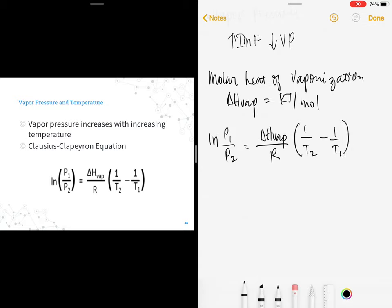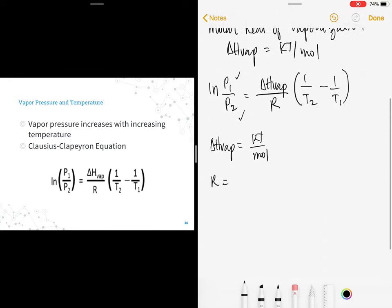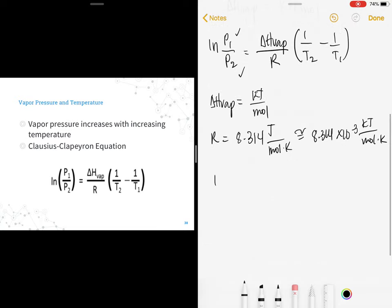What are the important points to remember here? Whatever unit P1 is, that should also be the unit of P2. The molar heat of vaporization unit is kilojoule per mole. R, your gas constant, is 8.314 joule per mole Kelvin. But if we're using kilojoule values, this is 8.314 times 10 raised to negative 3 kilojoule per mole Kelvin. Of course, the temperature should always be expressed in Kelvin.